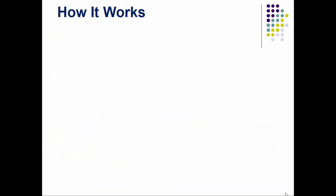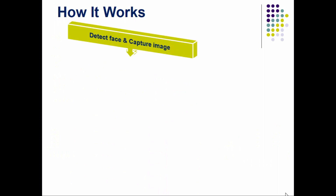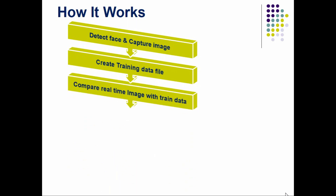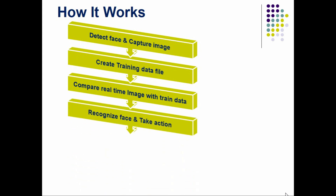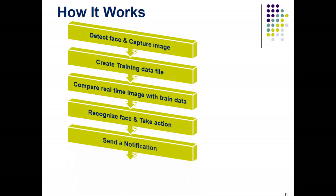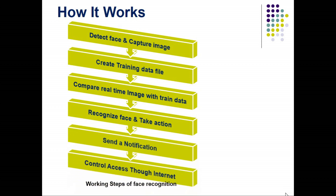Now, how it works: first, detect a face and capture the image; second, create a training data file; third, compare the real-time face image with trained data; fourth, recognize the face and take action; fifth, send a notification; and sixth, control access through the internet. This is the working step of the face recognition system.